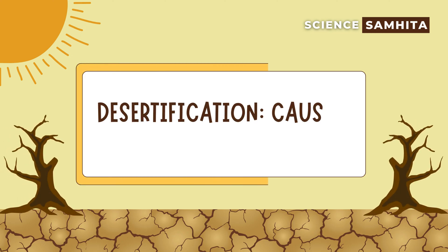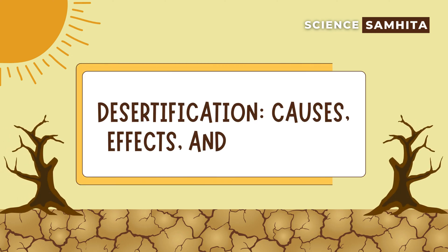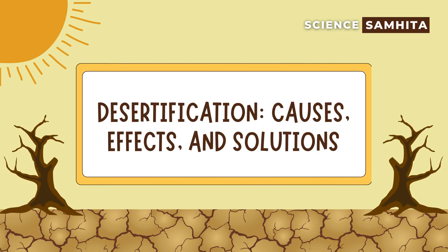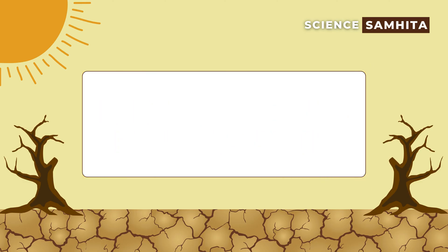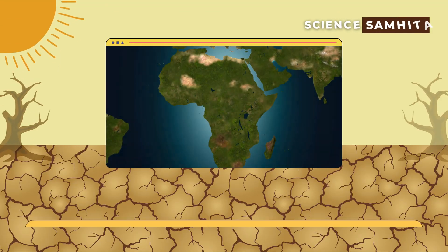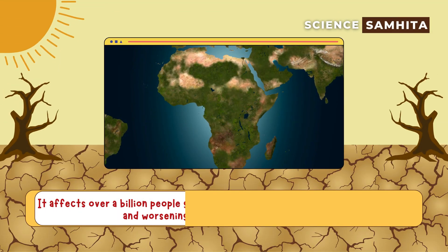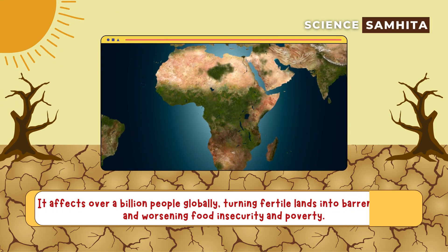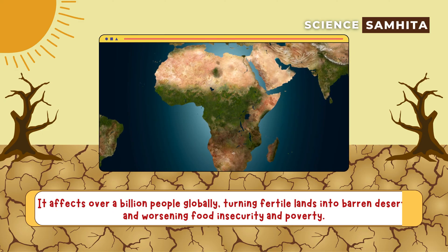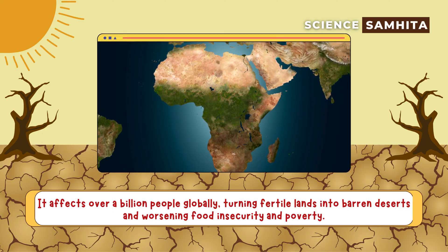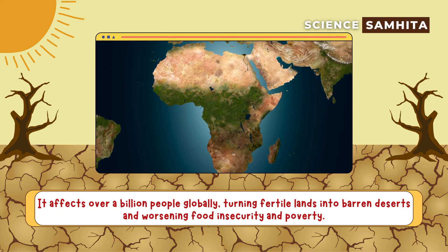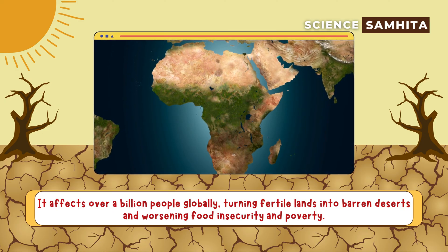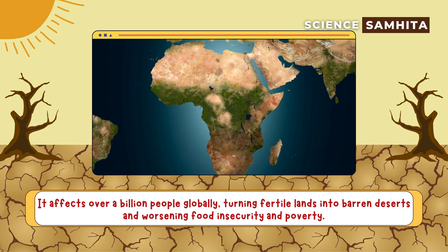Desertification is a pressing environmental challenge that silently threatens our planet. It affects over a billion people globally, turning fertile lands into barren deserts and worsening food insecurity and poverty.